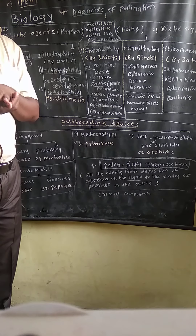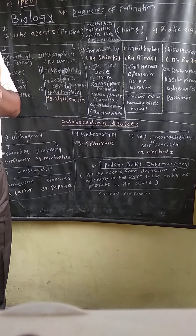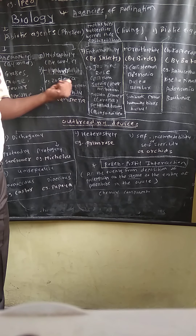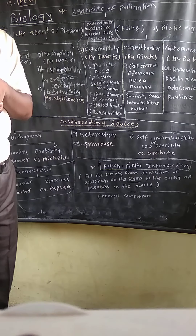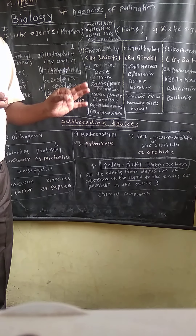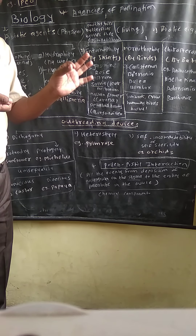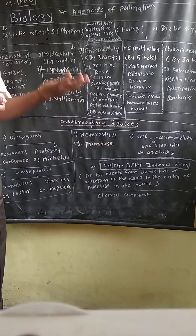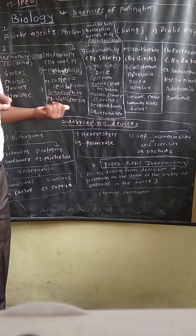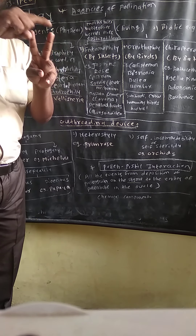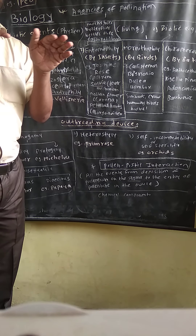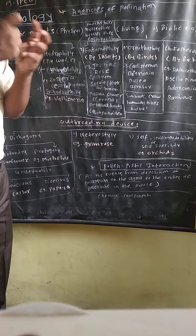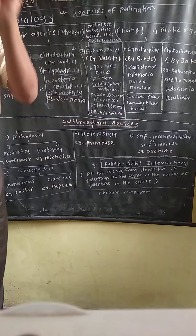There are two types of hydrophily: hypo-hydrophily and epi-hydrophily. In hypo-hydrophily, pollination takes place below the water surface. Examples are Zostera and Ceratophyllum. In epi-hydrophily, pollination occurs on the surface of water — 'epi' means on or above. Example is Vallisneria, which is a dioecious plant. Male and female flowers are totally differentiated. Pollen grains float on the surface, the stigma has a coil structure, and cross-pollination always takes place.